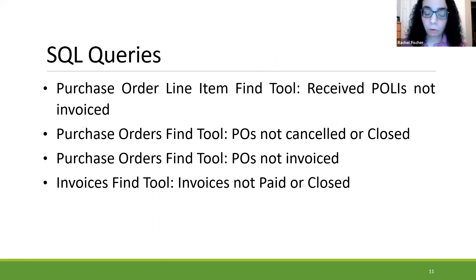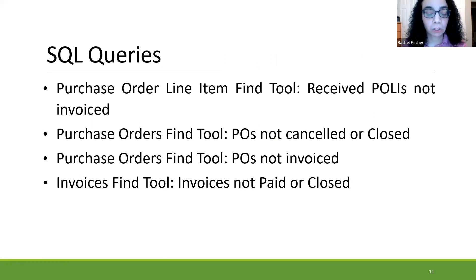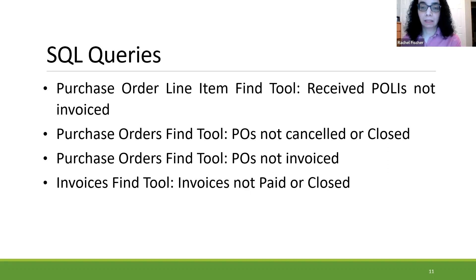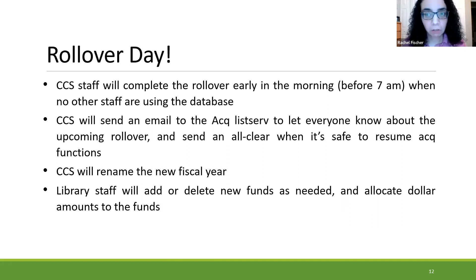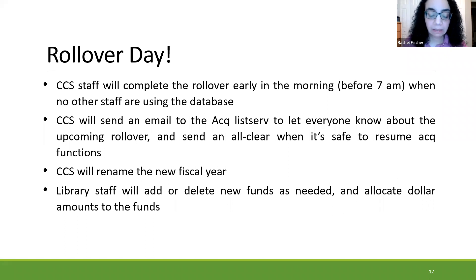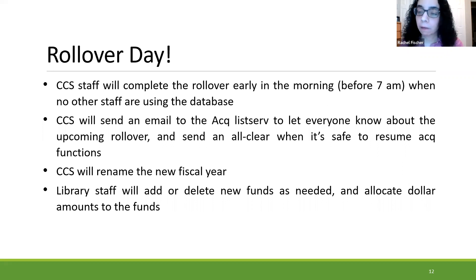There are a number of SQL queries that are helpful to run. On the purchase order line item find tool, you'll see the 'received, not invoiced' query. The purchase order find tool has two saved queries: 'purchase orders not canceled or closed' and 'purchase orders not invoiced.' There's also one on the invoices find tool: 'invoices not paid or closed.' On the day of the rollover, CCS staff will complete the rollover early in the morning before 7am, or after 9pm. This is done when no other staff are using the database.